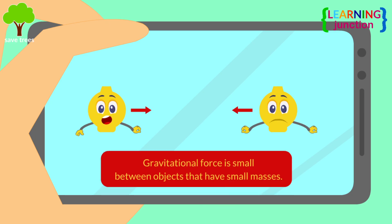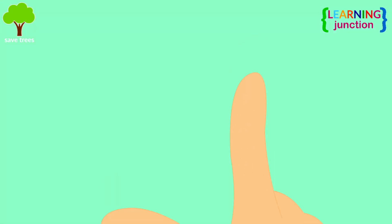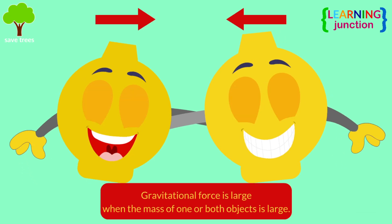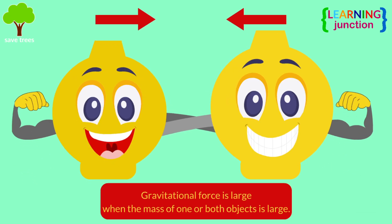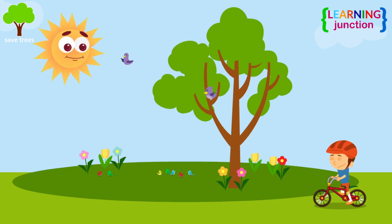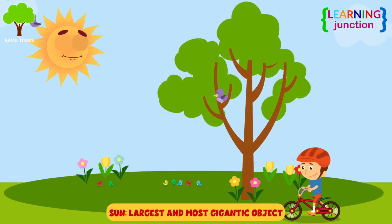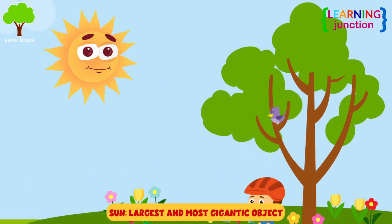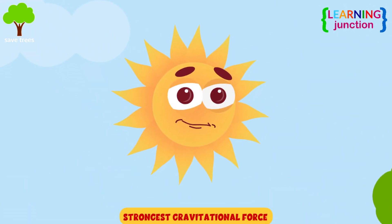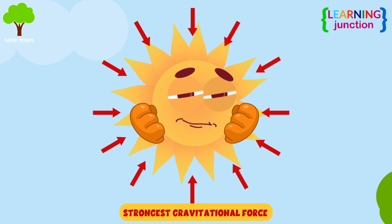Gravitational force is small between objects that have small masses. Gravitational force is large when the mass of one or both objects are large. The Sun is the largest and most gigantic object in the solar system, so it has the strongest gravitational force.